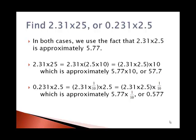If we want to find products of numbers that aren't on the log table like 25 or .231, both of these actually rely on this 2.31 and 2.5 and we just have to adjust by powers of 10. For 2.31 times 25, we can break that 25 into 2.5 times 10, use the associative property to get 5.77 times 10 or about 57.7.